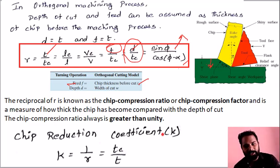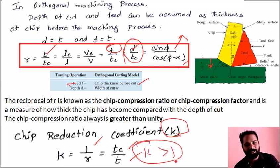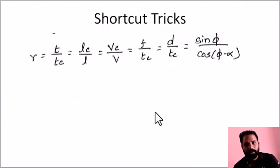Next is the chip reduction ratio, denoted K. It is the reciprocal of the chip thickness ratio, so K equals Tc by T. Since Tc is greater than T after cutting, K is greater than 1 and R is less than 1. Chip reduction ratio, chip compression ratio, and chip compression factor are all greater than 1.